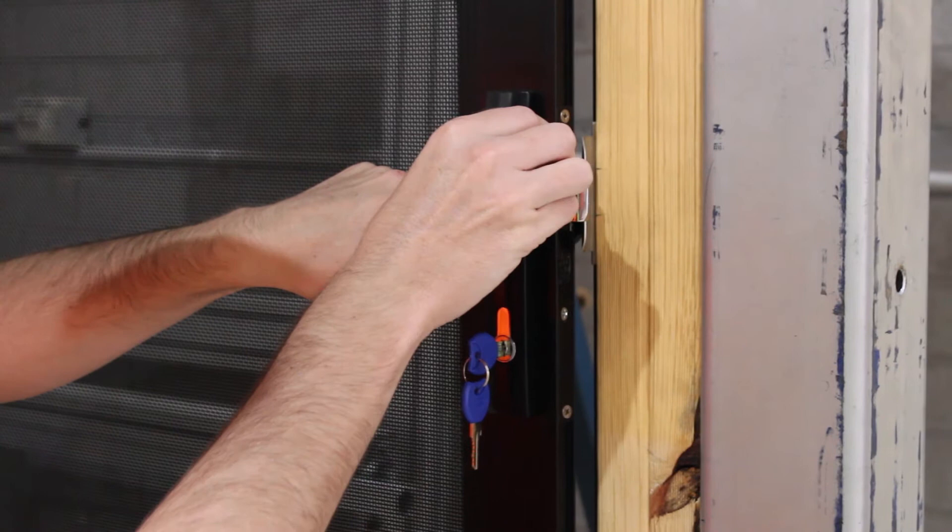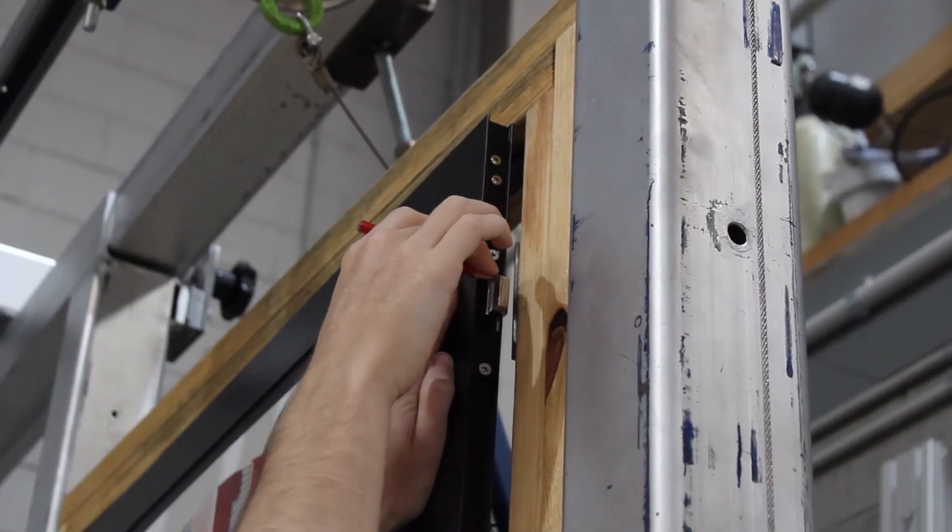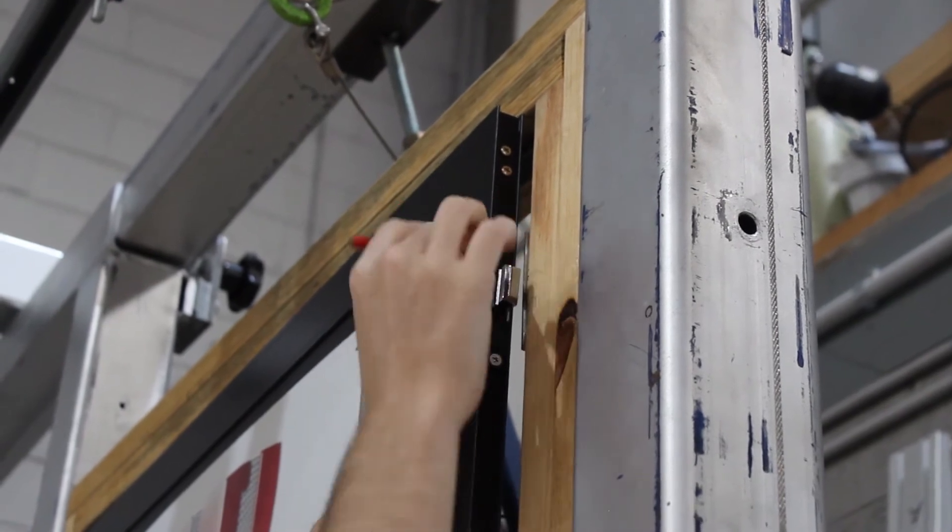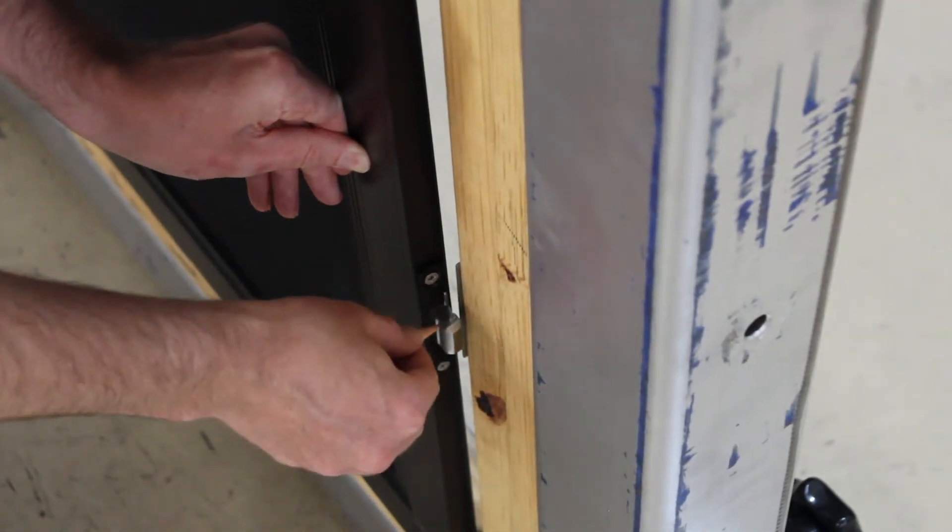With the tongue extended, we're closing the door up against the jam and the striker. From there, we will then mark where the tongue and the striker meet. Repeat the same method for the top and bottom slaves.